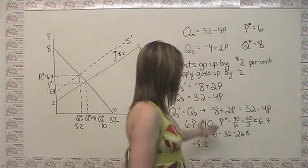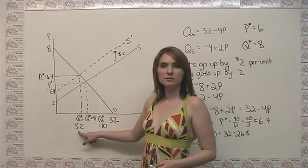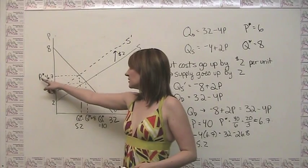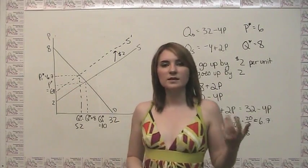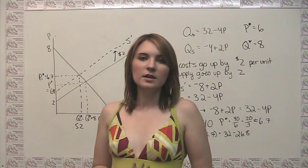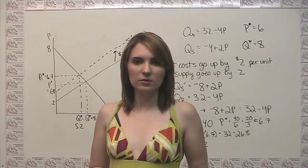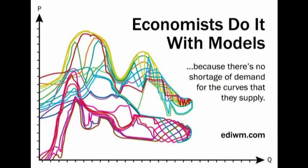So again, we see quantitatively, we get a decrease in quantity from 8 to 5.2, and we get an increase in price from 6 to 6.7, which is consistent with what we said qualitatively earlier, that a decrease in supply is going to lead to a decrease in equilibrium quantity and an increase in equilibrium price.